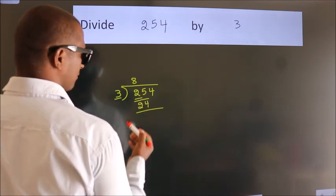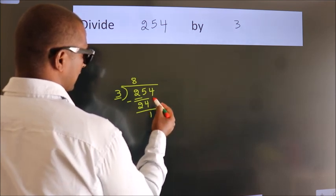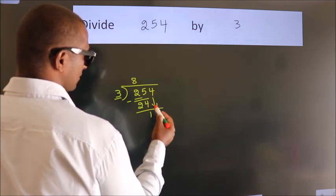Now, we should subtract. We get 1. After this, bring down the beside number. So, 4 down.